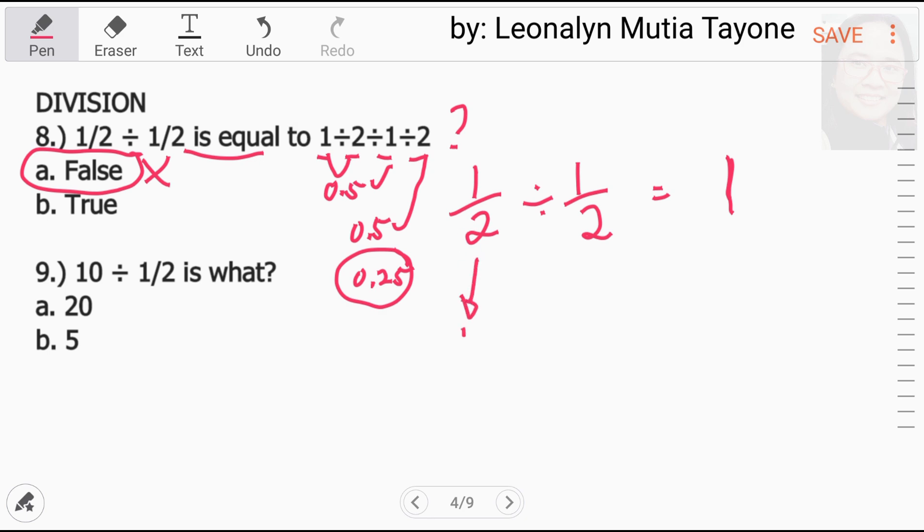Si 1 half, kopyahin. Si division maging multiplication at reciprocal ni divisor 2 over 1. Ngayon, pwede na natin i-multiply. 1 times 2 equals 2. 2 times 1 equals 2. 2 over 2 that is 1.